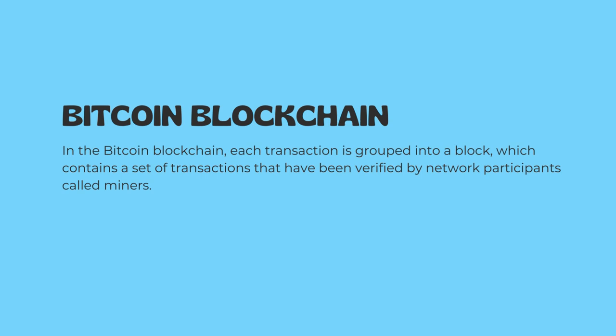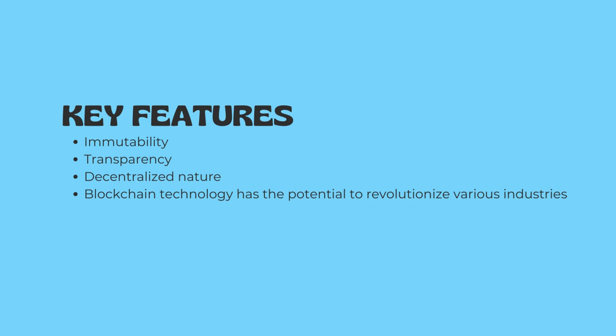In the Bitcoin blockchain, each transaction is grouped into a block, which contains a set of transactions that have been verified by network participants called miners. Miners use computational power to solve complex mathematical problems, a process known as mining. Once a miner solves a problem, the block is added to the blockchain and the miner is rewarded with newly mined Bitcoin.